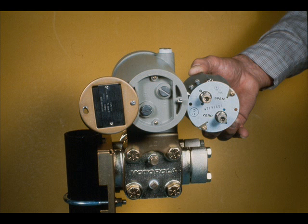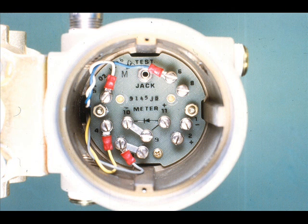These are the zero and span adjustments. Here, the 24 volt DC positive and negative terminals are shown. The four wires to the left are from the measuring cell. The test jack is for measuring the transmitter output. A local or remote indicator may be connected across meter terminals 10 and 11.